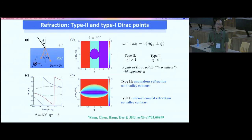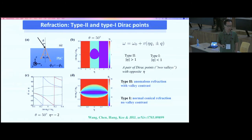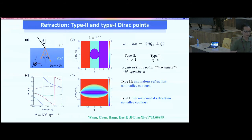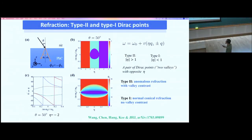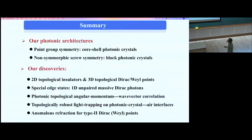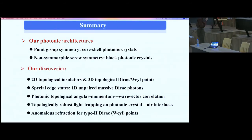We also find that shining light from air into this photonic crystal near the Type-II Dirac point causes the light to split into two beams with precisely opposite reflection angles — one with a positive reflection angle and one with a negative reflection angle. This holds for any frequency within the linear dispersion regime near the Dirac point and for any incident angle. This is one of the very anomalous optical properties of this system, and I will summarize my talk here.